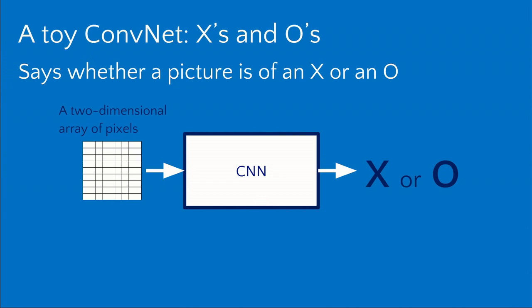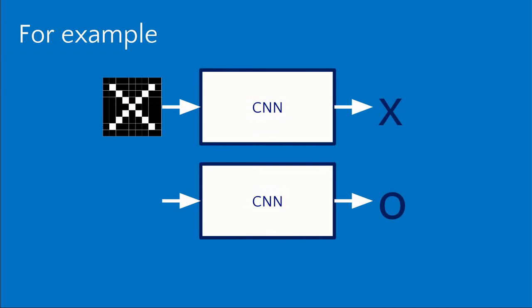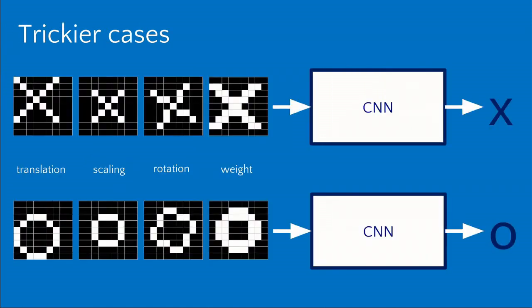To dig into how these work, we'll start with a very simple example — a convolutional neural network that can look at a very small image and determine whether it's a picture of an X or an O, just two categories. We want our network to handle cases where these inputs are of different sizes, rotated, heavier, or lighter, and every time give us the correct answer.